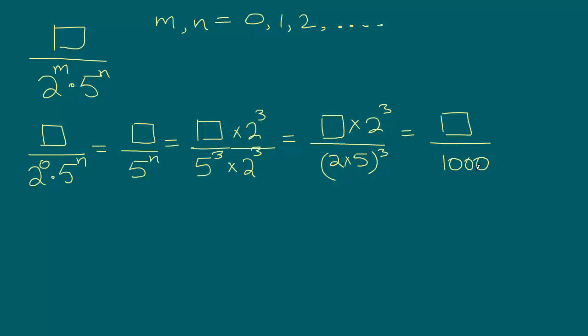And we know that whenever we have this, it will be always a terminating decimal number. The decimal expansion will always be terminating.